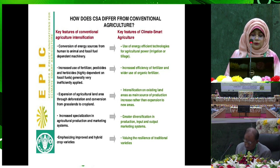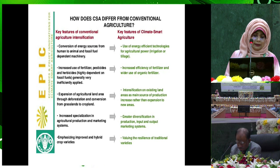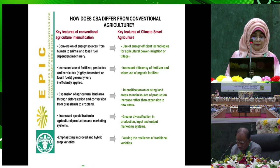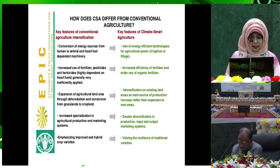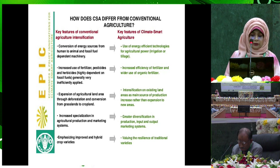I want to show the difference between climate smart agriculture and conventional agriculture practice. In the conventional system, there is increased use of fertilizers, pesticides, and herbicides, highly dependent and very inefficiently applied. Whereas in climate smart agriculture, there is increased efficiency of fertilizer and water use, and use of organic fertilizer.